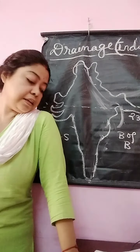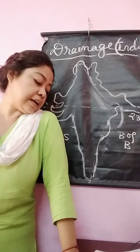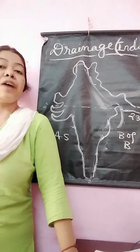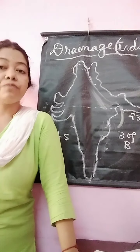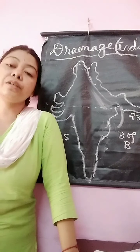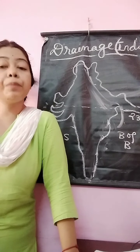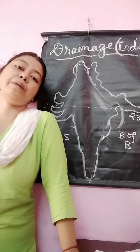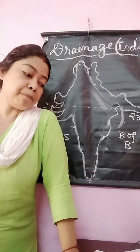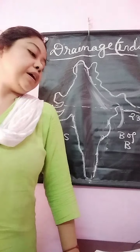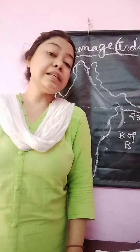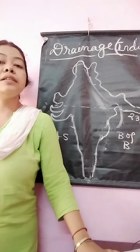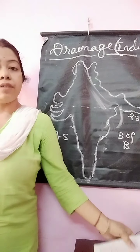El Niño is the warm tropical wind that blows off the coast of Peru. In an El Niño year, the rainfall from monsoon winds suffers a lot. El Niño means 'the Christ child.' The opposite of El Niño is La Niña; during La Niña, the rainfall is not so high.